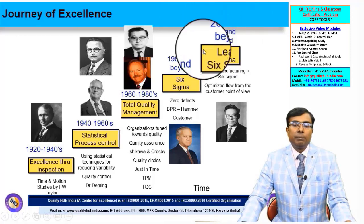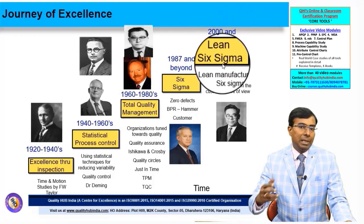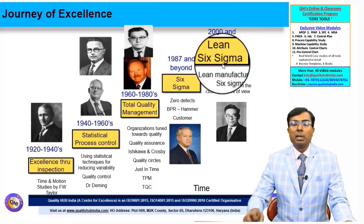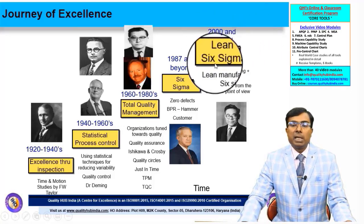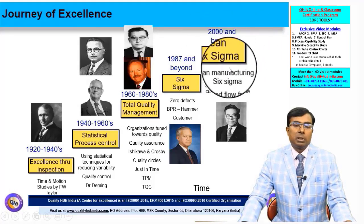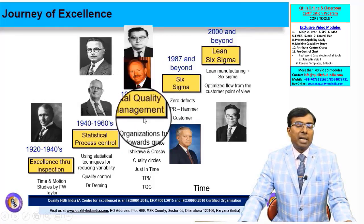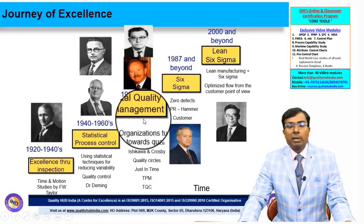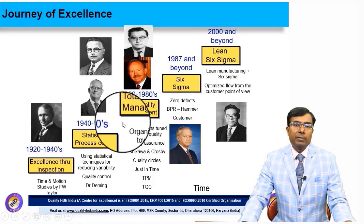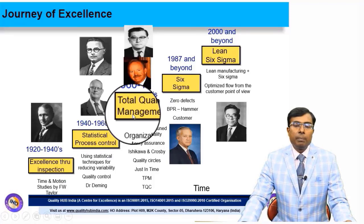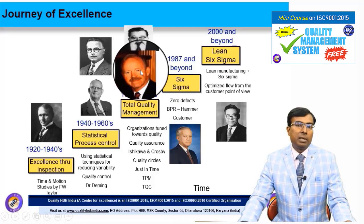Lean initiatives started being used with Six Sigma during 2000 and beyond. People began understanding the importance of combining lean with Six Sigma, giving rise to Lean Six Sigma post-2000. Total quality management remained a focus area as the industry evolved step-by-step, phase-by-phase, with many prominent figures contributing different concepts.